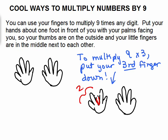So there's two fingers here, and here's the finger that's down. And then you've got seven fingers left. So you've got two fingers to the left of your third finger, seven fingers to the right of your third finger. And that's 9 times 3, 27.